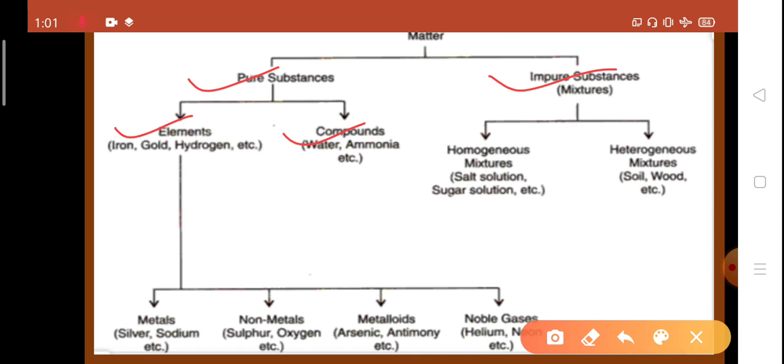Elements are again further divided into four parts. Metals, these are lustrous, they can conduct heat and electricity, they are malleable and ductile and are sonorous, which means can produce sound in nature.